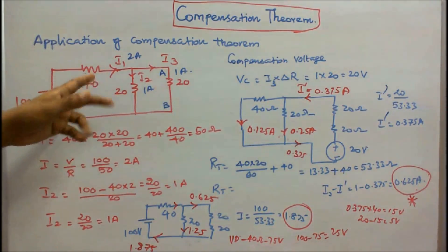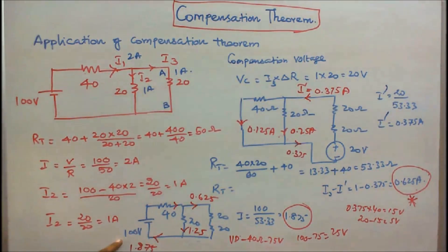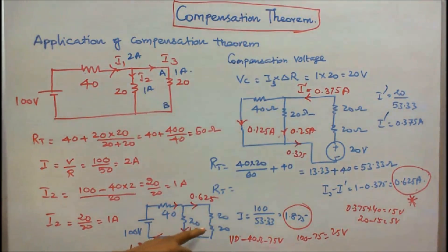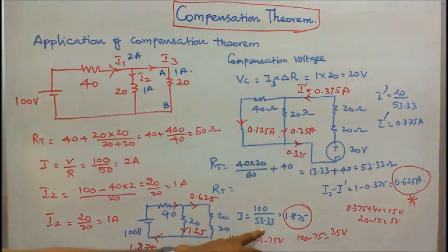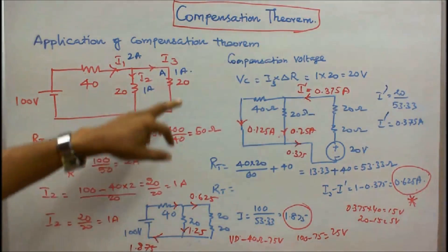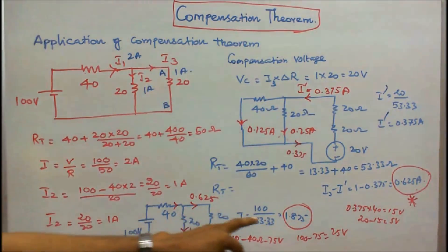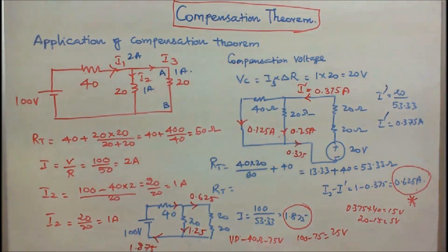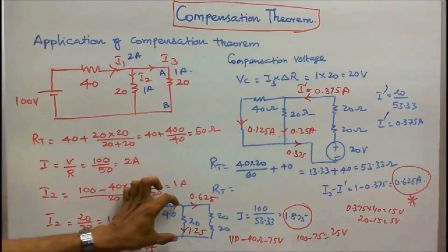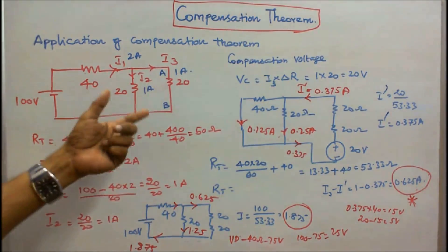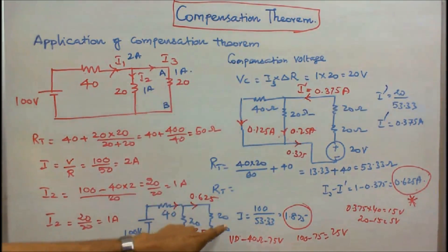By adding the 20 ohm resistor, there will be a change in the current. To verify: with 100 volts, 40 ohm in series, and 20 ohm in parallel with (20 plus 20) equals 40 ohm, total resistance is 20 times 40 divided by 60 plus 40 equals 53.33 ohms. I equals 100 by 53.33 equals 1.875 amps. Initially the current was 2 amps; after adding the resistance it becomes 1.875 amps. Voltage drop across 40 ohm is 1.875 times 40 equals 75 volts, so remaining voltage is 100 minus 75 equals 25 volts. Current through 20 ohm branch is 25 by 20 equals 1.25 amps, and current through the 40 ohm parallel branch is 25 by 40 equals 0.625 amps.